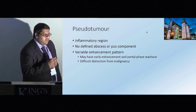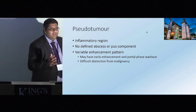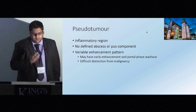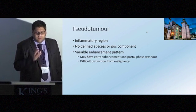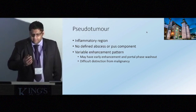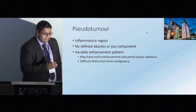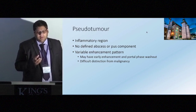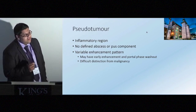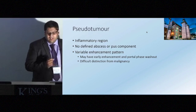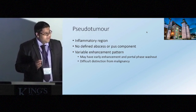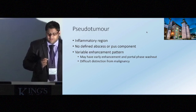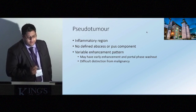Liver abscesses have a gradation — they don't simply appear out of nothing. They progress from inflammatory regions to micro-abscesses, to a single cavity collection, to widespread. The first area to look at is the pseudotumour: an inflammatory region with no defined pus component. This is important to recognise because it's a great mimic — it can mimic malignancy and can be very difficult to distinguish, particularly as it may have early portal phase washout.